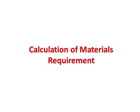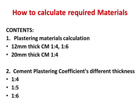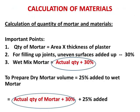We have made a detailed calculation of plastering with different thicknesses and different ratios. The other part is we have tabulated the coefficients of plastering materials for different thicknesses and different cement mortar ratios. Now we will start the calculation of materials.